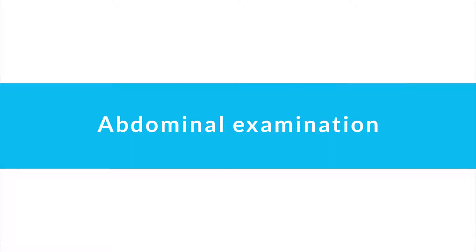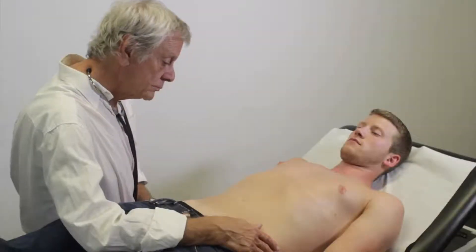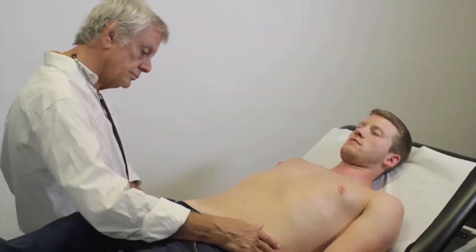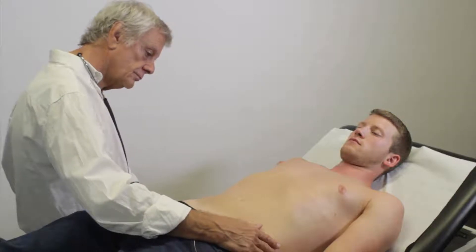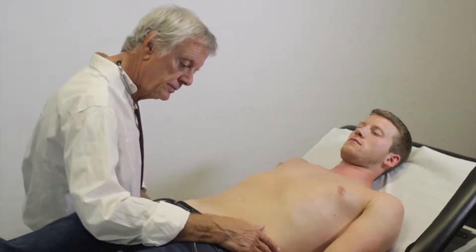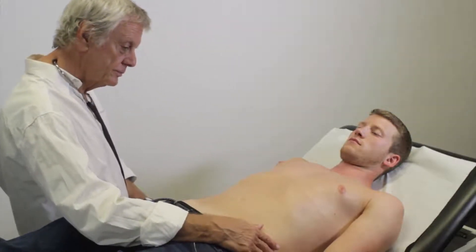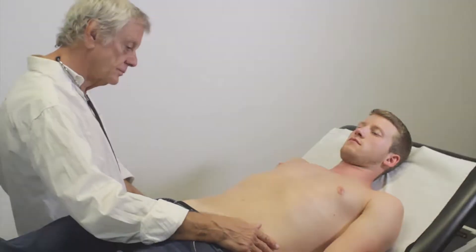Abdominal examination begins with inspection. Abnormalities such as distension, scars, stretch marks, hematomas, and engorged veins can provide the first evidence for conditions involving the abdomen.